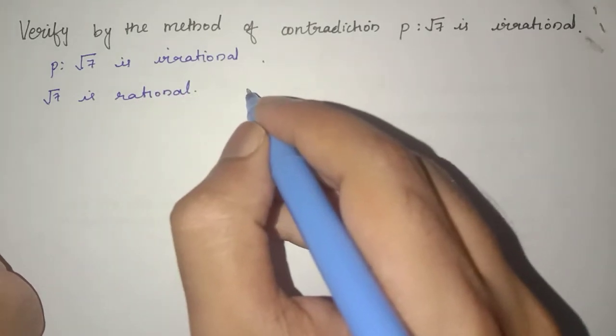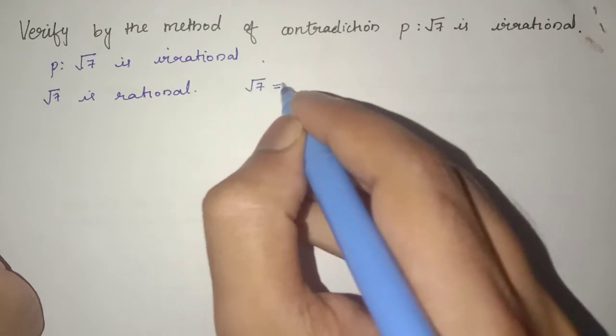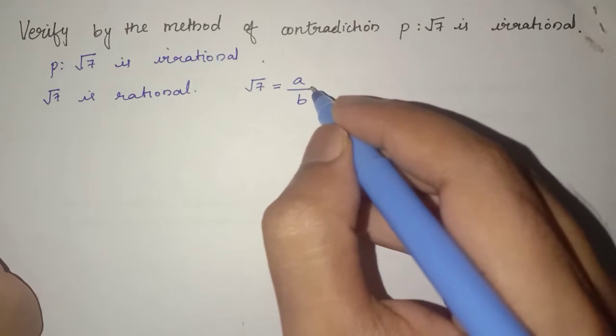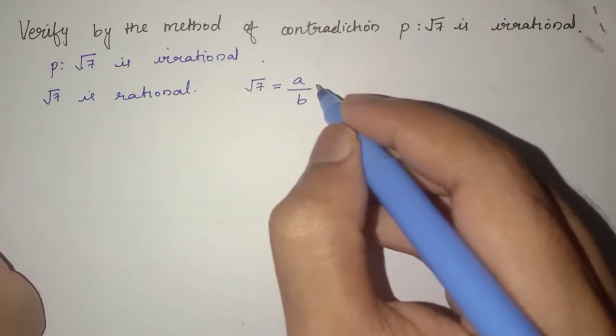So root 7 can be written in the form A/B where A and B are integers having no common factor.